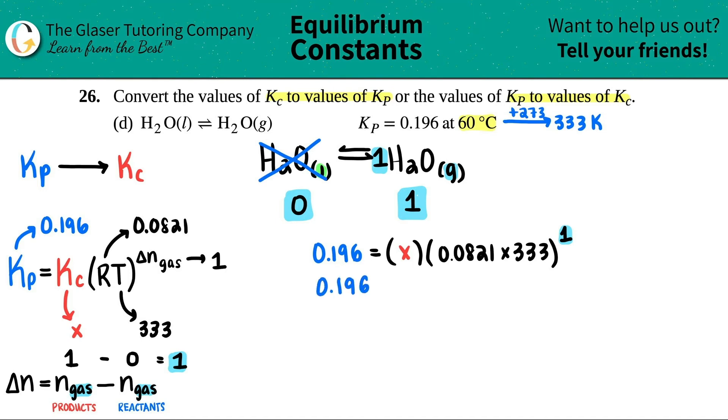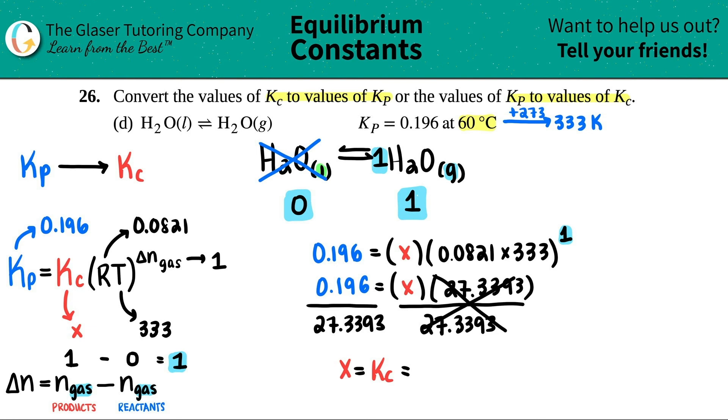So let's see. I got 0.196. And this equals the Kc value. And now let's just do that multiplication. So 0.0821 times 333. I get 27.3393. And raised to the first would be the same number. Now I just need to solve for X. So I'll just divide by 27.3393 on both sides. 27.3393. Get rid of this. Say bye-bye. And now let's see. We finally get an X value, which is the Kc value. So let's see what it is. 0.196 divided by that answer.